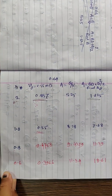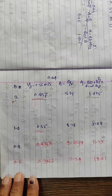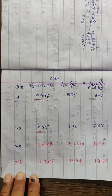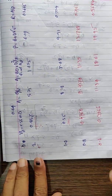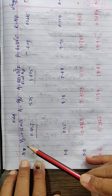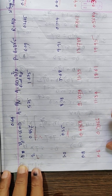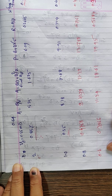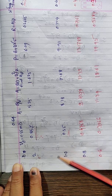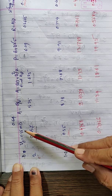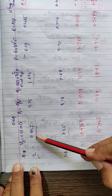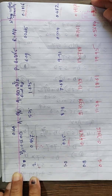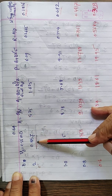First, we will assume depth D. We will find out V0, the critical velocity, by Kennedy's theory: V0 = 0.55 × M × D raised to power 0.64. By substituting the value of M and assuming D equal to 2 meters, we get V0 = 0.857. Then we find out area A = Q / V, where Q is known and V is calculated.